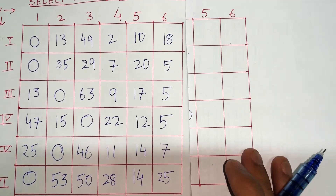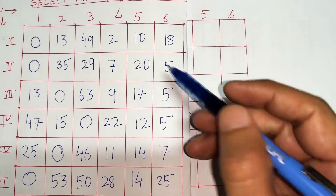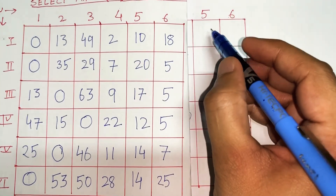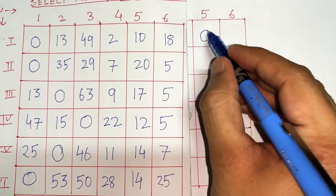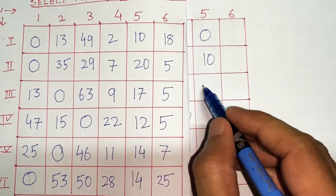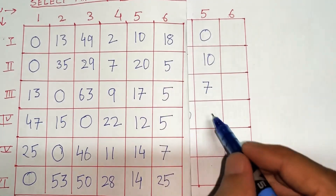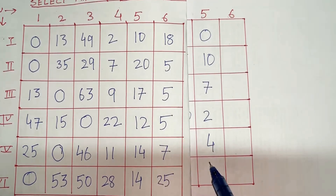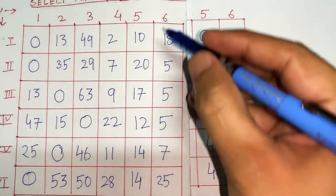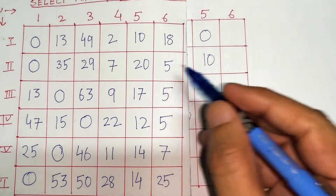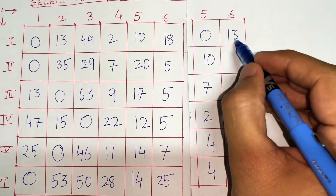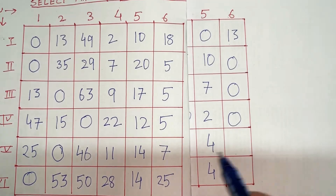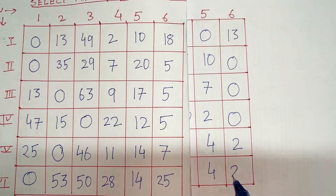For the 5th column, the minimum is 10, so subtracting 10 throughout gives: 10-10=0, 20-10=10, 17-10=7, 12-10=2, 14-10=4. For the 6th column, the minimum is 5: 18-5=13, 5-5=0, 5-5=0, 5-5=0, 7-5=2, 25-5=20.